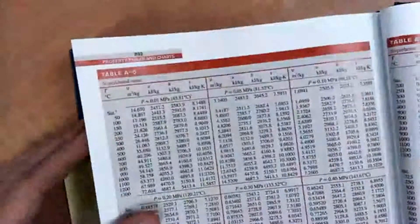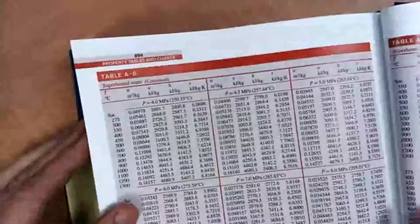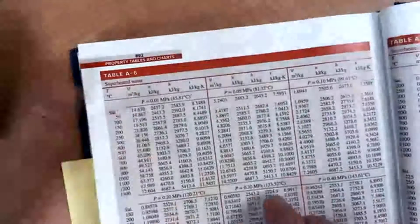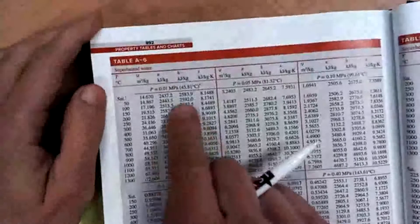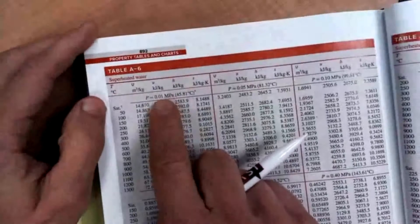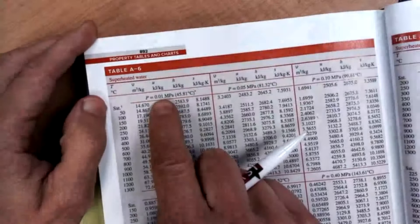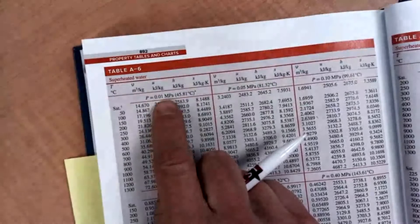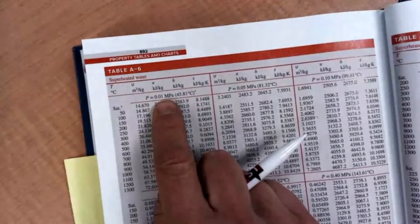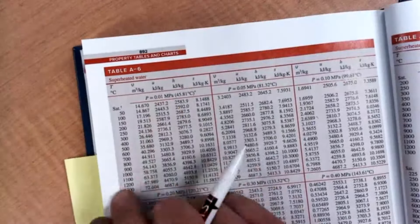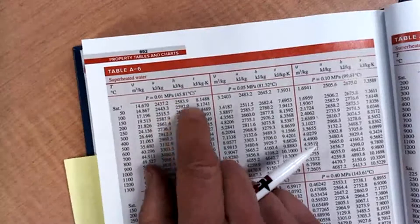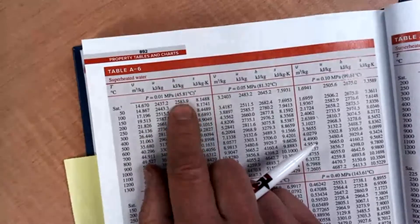So I can go to the superheated vapor table, superheated water. The lowest pressure I've got is 0.01 megapascals. We're at 0.001 megapascals. I see that the enthalpy is around 2500 here.